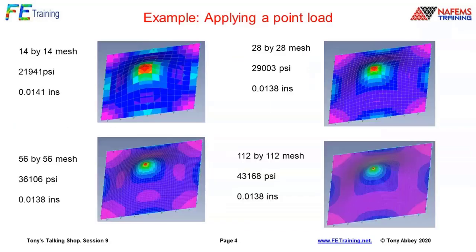If I increase the mesh refinement, the stresses smooth out overall but that local region keeps going up and up. From about 13,000, to 22,000, then 29,000, 36,000, 43,000. The stress is getting smoother in general, but that central point — that is the stress singularity — just keeps increasing. That's what we call a singularity: the stress just goes up and up, it's never bounded.